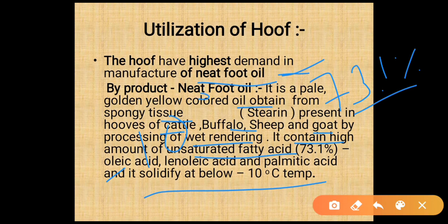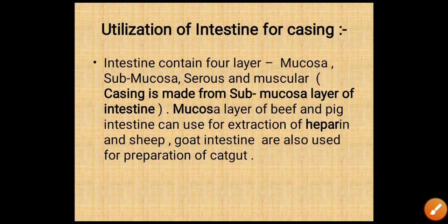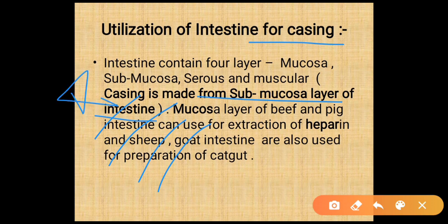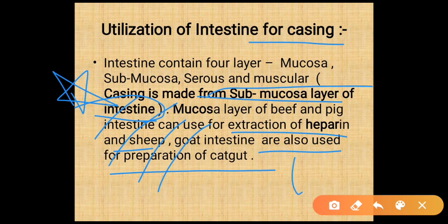Utilization of the intestine for casings: the intestine contains four layers — outermost is mucosa, then submucosa, then serosa, then muscular. Casings are made from the submucosa layer of the intestine. The mucosa layer of beef and pig intestine can be used for the extraction of heparin, and sheep and goat intestine are used for the preparation of catgut.